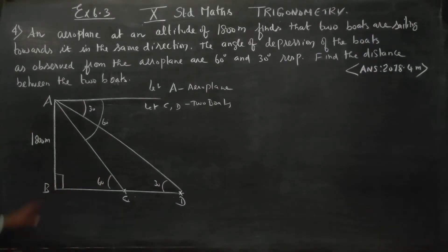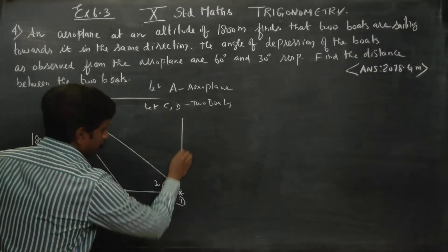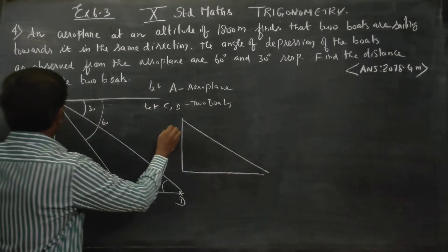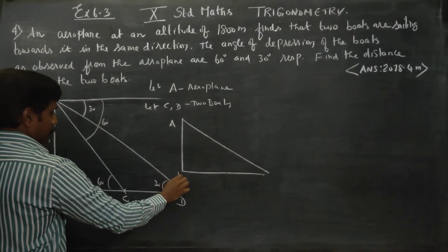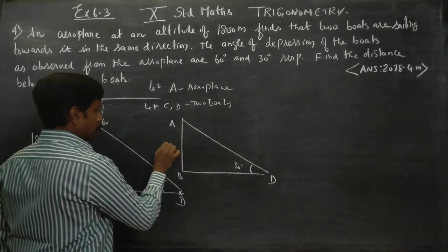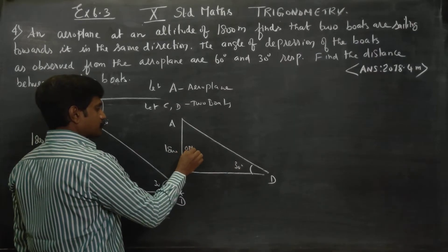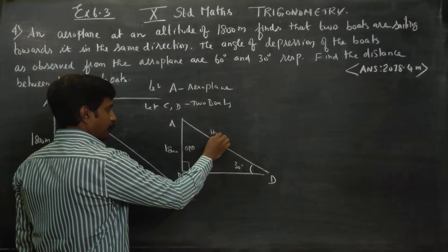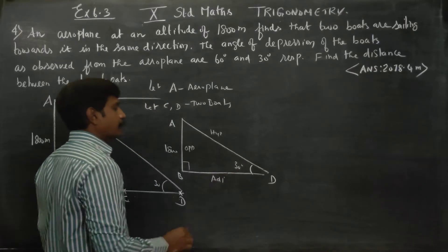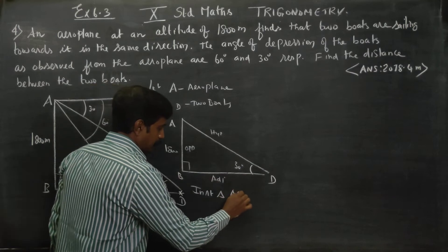First we will start with the bigger triangle, then the smaller triangle. I am starting with triangle ABD. In right triangle ABD, the altitude AB is 1800 and BD is the adjacent side. The angle at A is opposite and 90 degrees is at B.